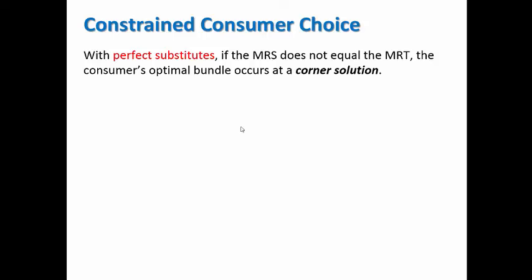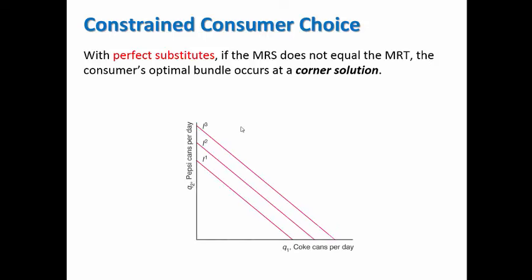For example, let's think about the case of perfect substitutes. For perfect substitutes, if the MRS does not equal the MRT, then we will have a corner solution. Let me show you this. Here's an example of two goods that are considered perfect substitutes, Coke and Pepsi.